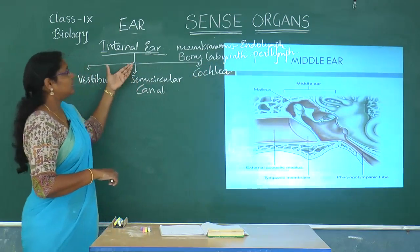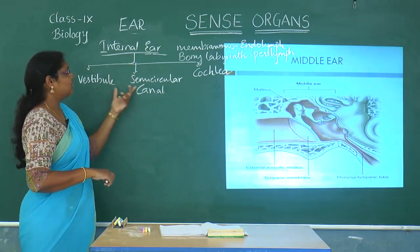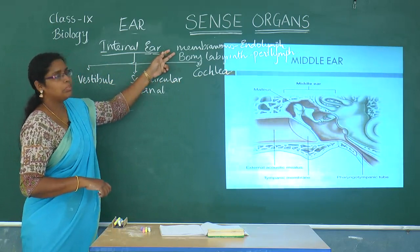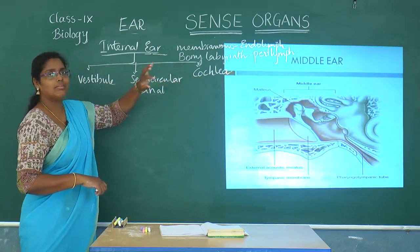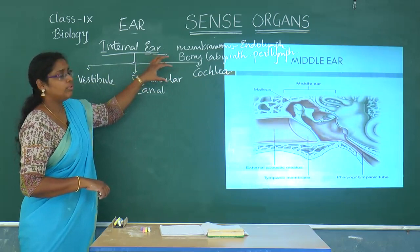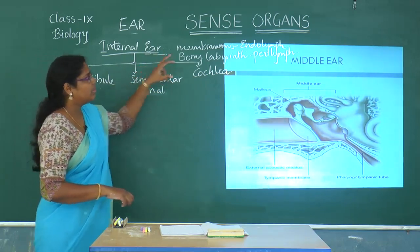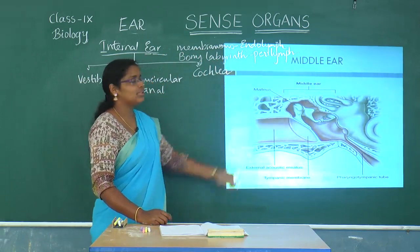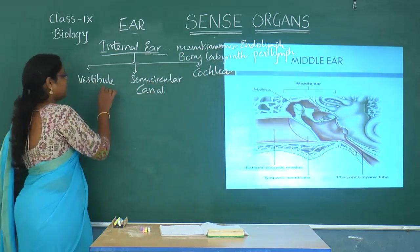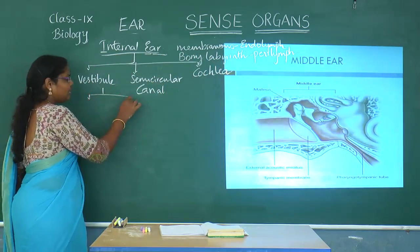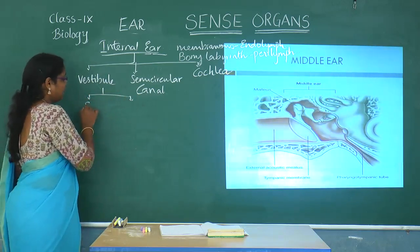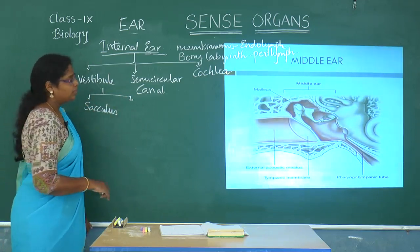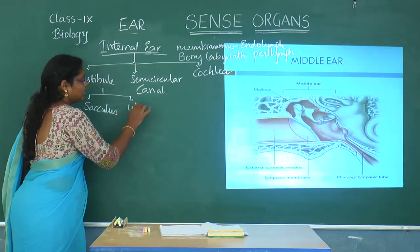The internal ear structures — vestibule, semicircular canals, and cochlea — all contain both membranous labyrinth and bony labyrinth. The vestibule has two parts: the anterior part called the sacculus and the posterior part called the utricle.